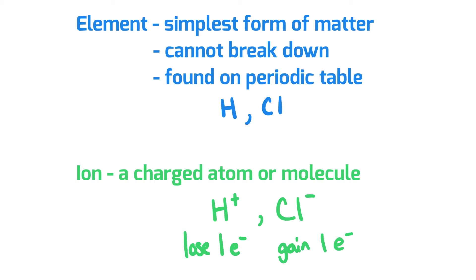But if we're talking about ions, we have to talk about oxidation numbers or oxidation states. And the oxidation state describes how many electrons the atom has gained or lost.